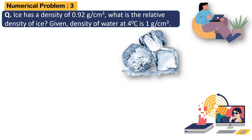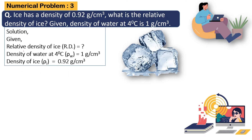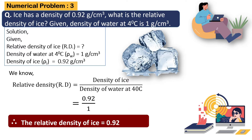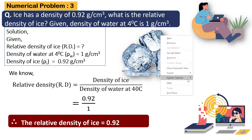Numerical Problem 3: Ice has a density of 0.92 gram per cm cube. What is the relative density of ice? Given: density of water at 4 degrees Celsius is 1 gram per cm cube. Relative density equals density of ice divided by density of water at 4 degrees Celsius, which equals 0.92 divided by 1, which equals 0.92. Therefore the relative density of ice is 0.92, and since it is a ratio it has no unit.